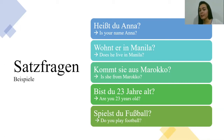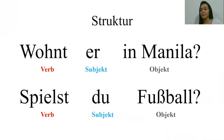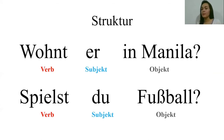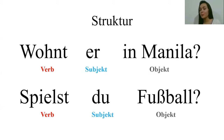When we look at these questions, we will see similarities in their structure. Let's take a deeper look. The first example: Wohnt er in Manila — Does he live in Manila? The first part of the question is the verb: 'wohnt' (live). Then 'er' (he) — the subject. Then 'in Manila' — the object. That's basically the structure of the Satzfrage: it is always verb, subject, object.